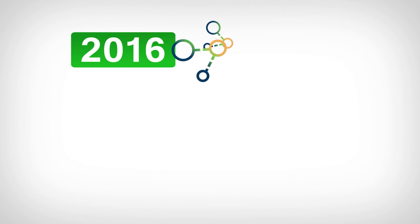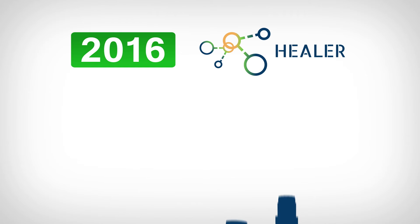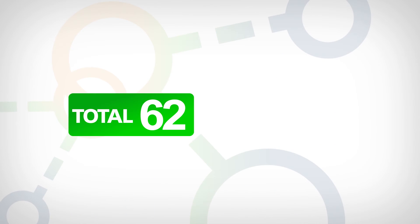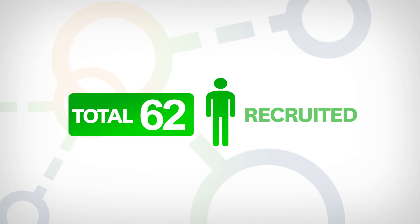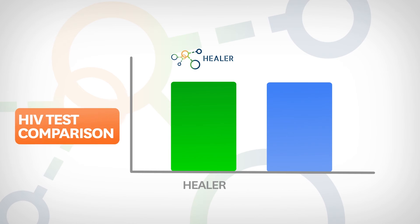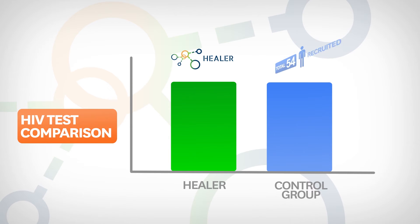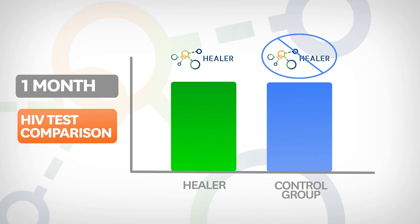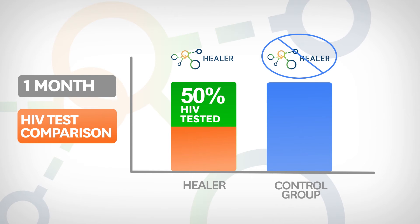In spring of 2016, we conducted a trial of the Healer system with homeless youth agencies here in Los Angeles. A total of 62 youth were recruited, and from that group, Healer selected 11 peer leaders. We compared this to a control group made of 54 youth, where peer leaders were selected without using Healer. After just one month, almost 50% of the youth in the Healer subset who had previously gone untested had taken an HIV test, in contrast to only 33% in the control group — demonstrating that Healer brings marked improvement over current approaches to network-based HIV interventions.